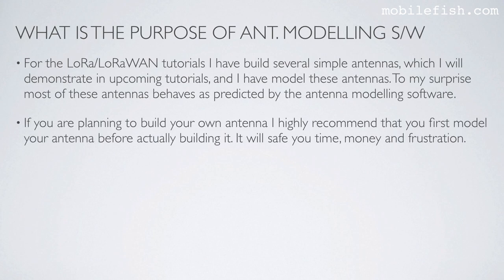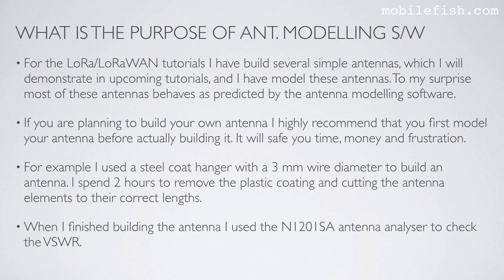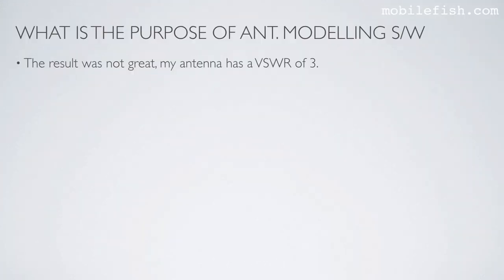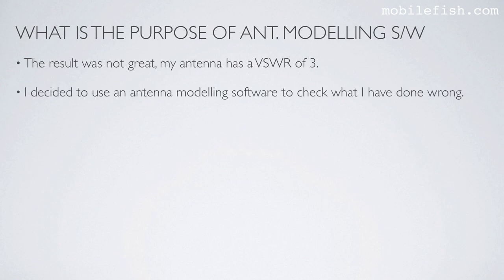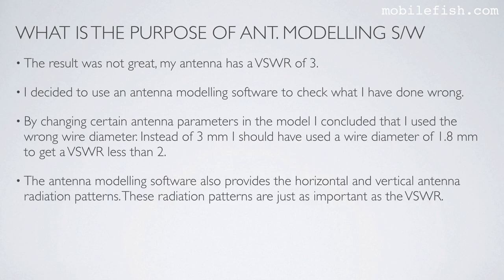If you are planning to build your own antenna, I highly recommend that you first model it before actually building it. It will save you time, money, and frustration. For example, I used a steel coat hanger with a 3 mm wire diameter to build an antenna. I spent 2 hours removing the plastic coating and cutting the antenna elements to their correct lengths. When I finished, I used the N1201SA antenna analyzer to check the SWR. The result was not great — my antenna had an SWR of 3. I decided to use antenna modeling software to check what I had done wrong. By changing certain antenna parameters in the model, I concluded that I used the wrong wire diameter. Instead of 3 mm, I should have used a wire diameter of 1.8 mm to get an SWR less than 2. The antenna modeling software also provides horizontal and vertical antenna radiation patterns.